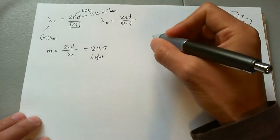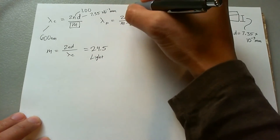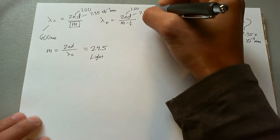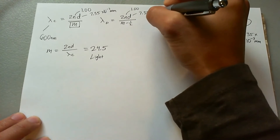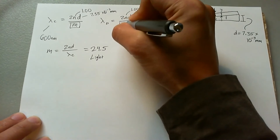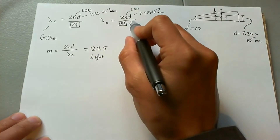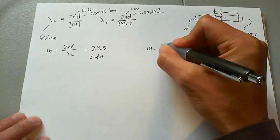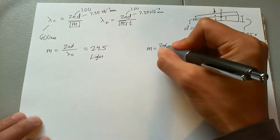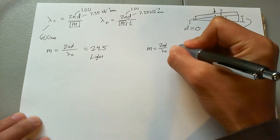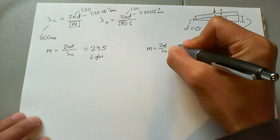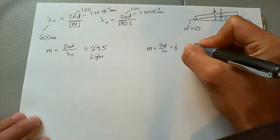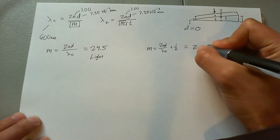Now for destructive interference, we put all the numbers down: n = 1.00, d = 7.35 times 10 to the negative 3 millimeters, and our job is to find m. Doing the same math, we just add another one-half at the end. The number of modes for dark fringes is equal to 25.